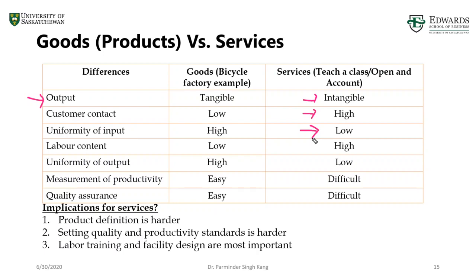Because uniformity of input is low in services, uniformity of output is low too. Services can be easily customized to individual customer needs, which leads to some difficulties: productivity is very difficult to measure, and it's difficult to control quality. That's why some operations are moving toward automation — so you can measure productivity more effectively by minimizing the human component and ensure quality is consistently produced. For goods, it is essentially the opposite of everything discussed for services. More details are available in your textbook on pages 10 and 11.